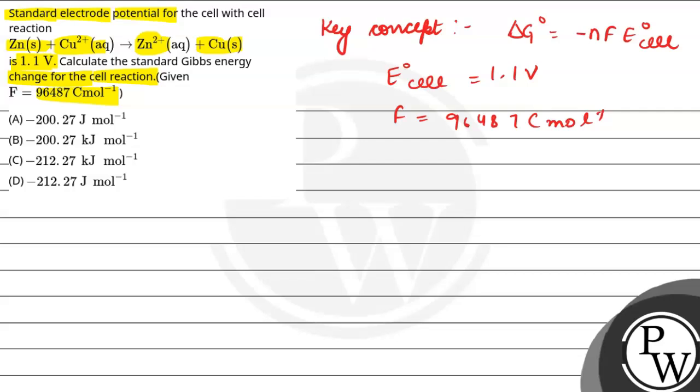Now we have the reaction that zinc solid is converted to Zn²⁺. So here we can see that zinc will be converted to Zn²⁺ plus two electrons, and Cu²⁺ will be converted to copper.